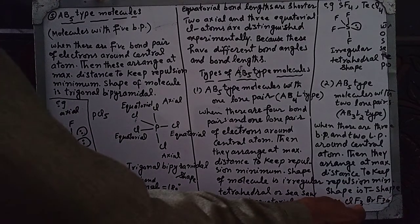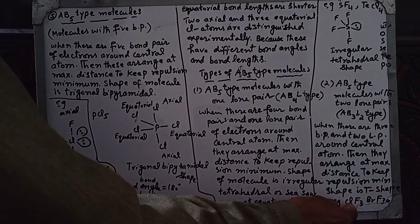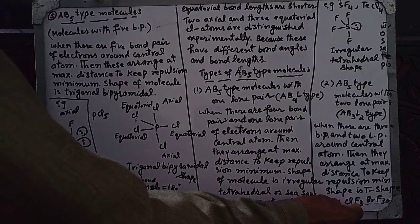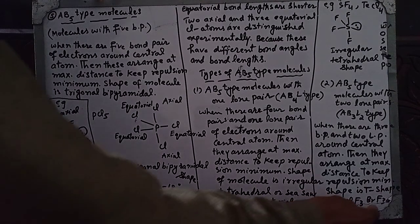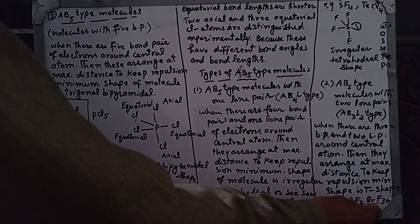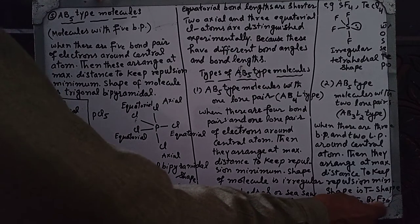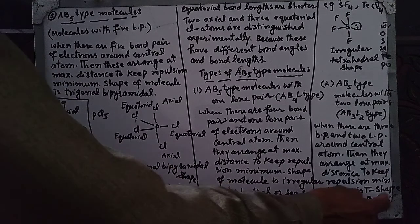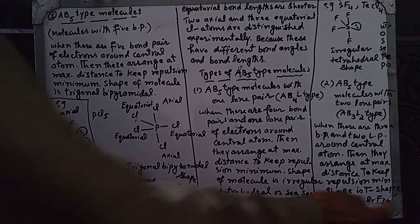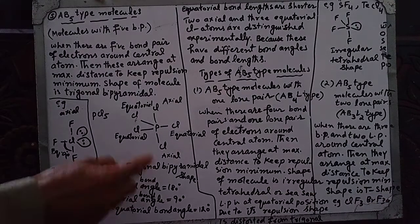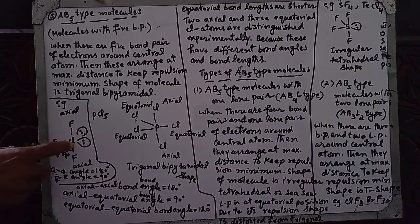For example, ClF3: Cl has seven electrons and three bond pairs with two lone pairs. BrF3 also has seven electrons with the same arrangement, giving two lone pairs. This is similar to ClF3.